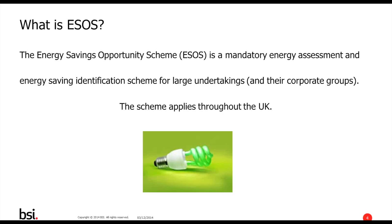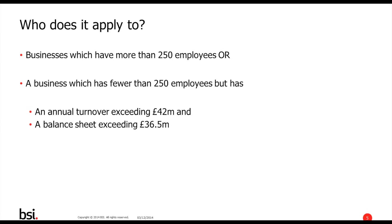There are two key areas which confirm whether businesses must participate. If the business has more than 250 employees in the UK, they meet the criteria. Even if they do not, should they exceed an annual turnover of more than £42 million and a balance sheet of more than £36.5 million, they will meet the criteria. If a corporate group contains at least one large UK organisation, then all UK organisations of that group must comply with ESOS regardless of their size. SMEs and public sector bodies are generally exempt.